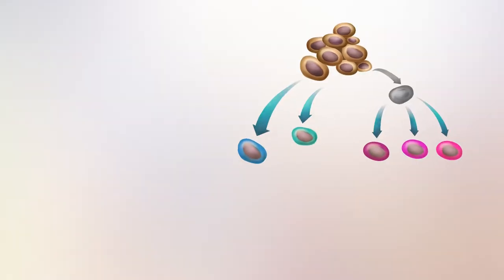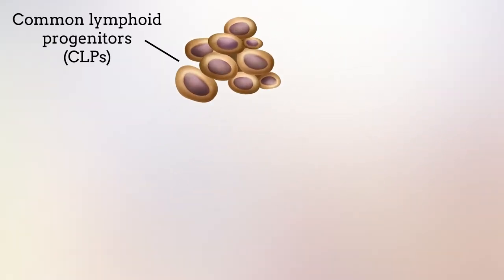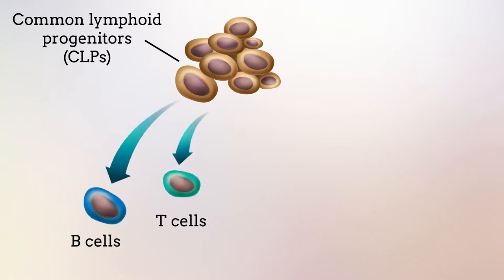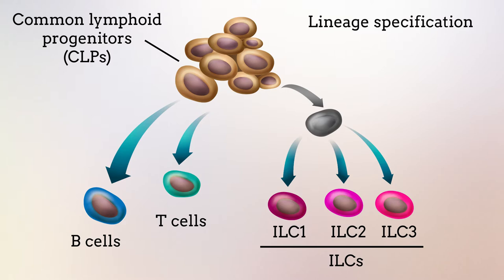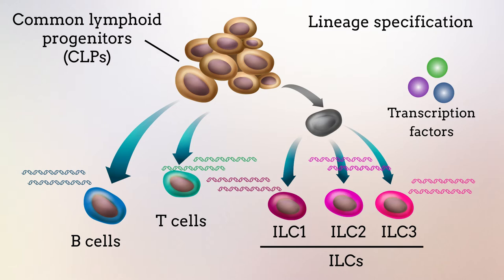Common lymphoid progenitors, or CLPs, give rise to numerous types of immune cells, including B cells, T cells, and three major subtypes of ILCs — ILC1, 2, and 3 — through a sequence of differentiation events. This so-called lineage specification is driven largely by proteins called transcription factors, which turn on whole suites of genes to specify the characteristics and behaviors of a given cell type.